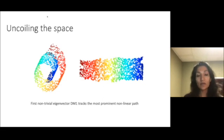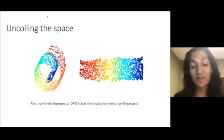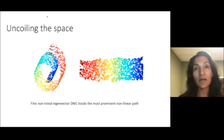The idea of uncoiling the space becomes fairly clear with the diffusion operator. The idea is the transition probabilities starting here follow the density of the data.